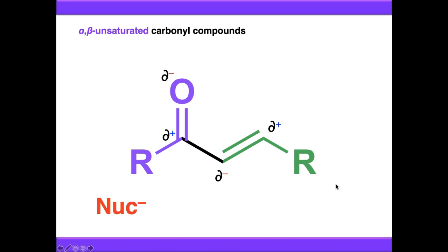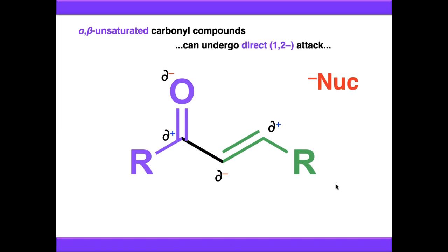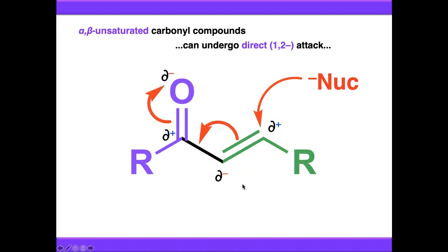When a nucleophile comes into contact with an alpha-beta unsaturated carbonyl compound, it could attack the carbonyl carbon as normal — giving 1,2 addition chemistry. Or it can attack the 1,4 position, the delta-positive end of the alkene. The electrons are pushed all the way through the conjugated system up onto oxygen, and that is conjugate attack.